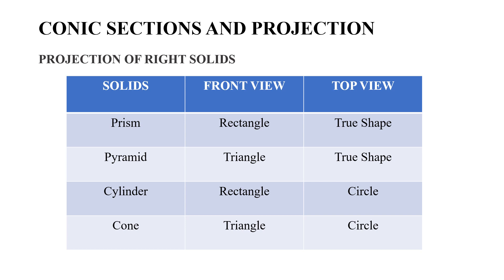Looking at the front view of the axis of a cone, the front view appears as a triangle and the top view appears as a circle. If we look at a pyramid, the front view is a triangle and the top view is a two-dimensional shape. The back view also appears as a triangle.